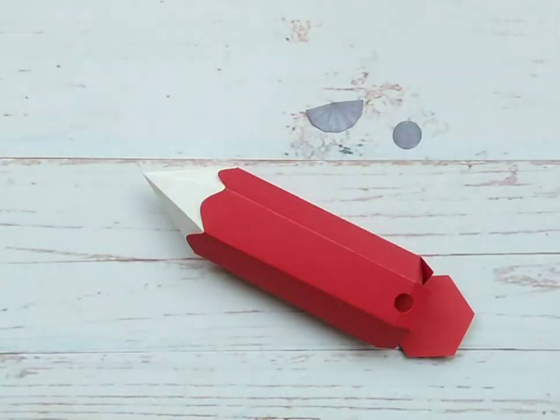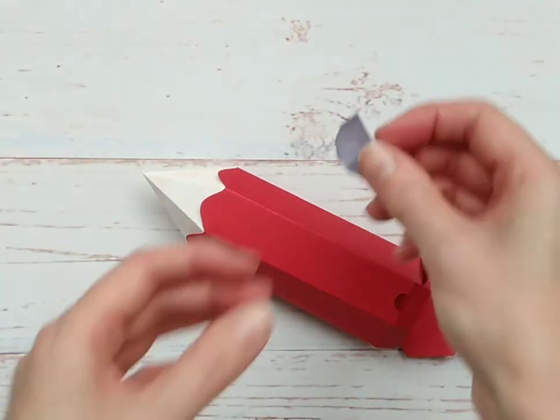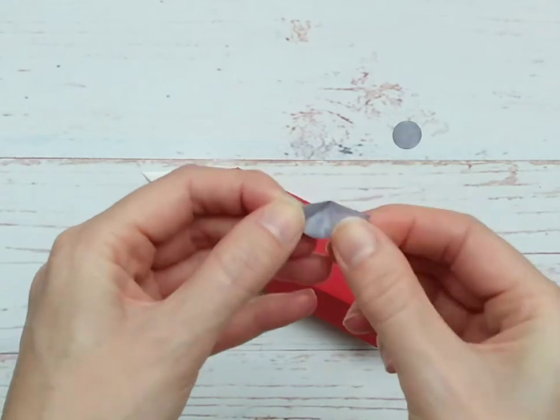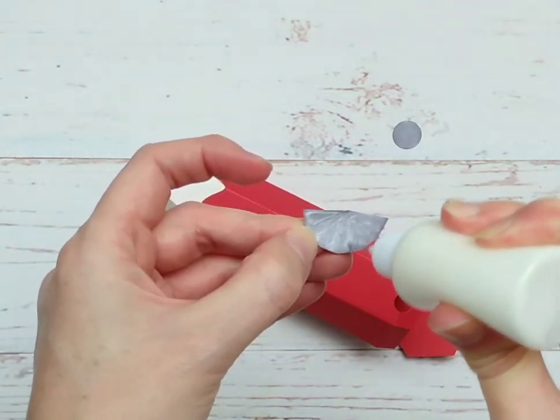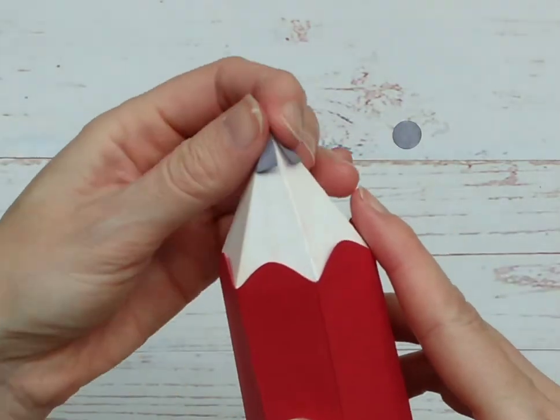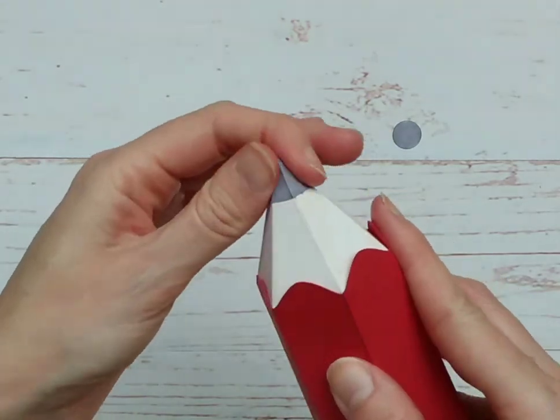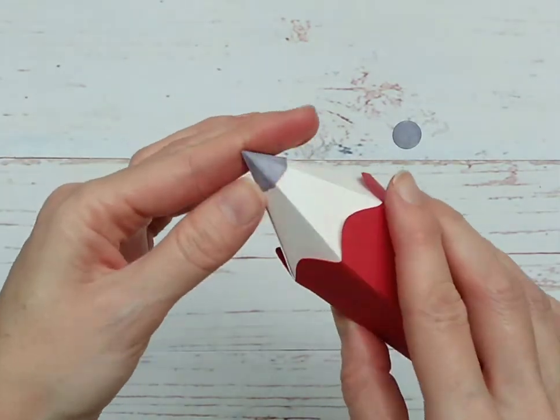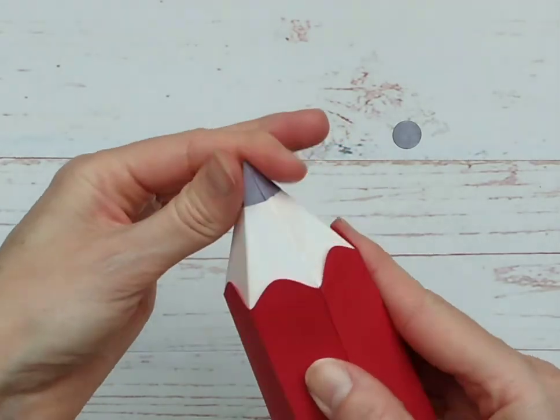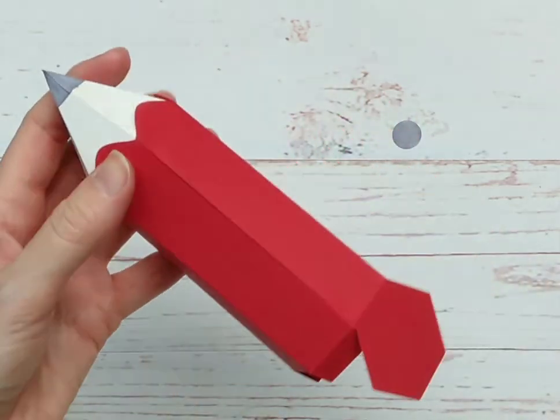So for the pencil lead, you can either use a dark grey color or maybe even the color of the pencil to make it more like a colored pencil. But I'm using grey for this one, and I'm using paper for this lead. You can use a thin card, but just nothing too thick. So put the glue on and then you want to wrap it around the end of the pencil. Just hold it until it dries. By using a thinner paper or card, it doesn't stand out too much. It sits nice and flush there.